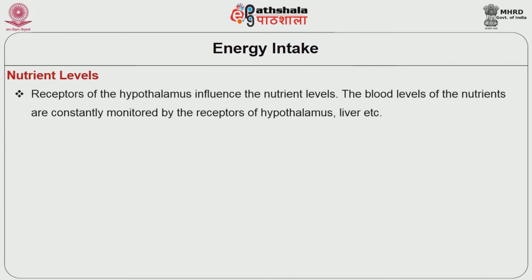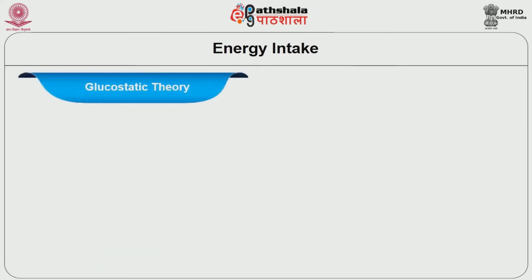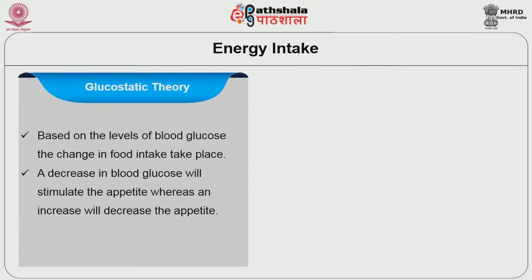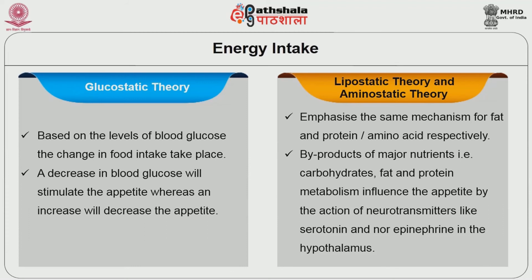Nutrient levels: receptors of the hypothalamus influence the nutrient levels. The blood levels of the nutrients are constantly monitored by the receptors of the hypothalamus, liver etc. Glucostatic theory, lipostatic theory and aminostatic theory well explain the energy nutrients. Glucostatic theory: based on the levels of blood glucose, change in food intake takes place — a decrease in blood glucose stimulates the appetite, whereas an increase decreases the appetite. Lipostatic theory and aminostatic theory emphasize the same mechanism for fat and protein or amino acids respectively. By-products of major nutrients — carbohydrates, fat and protein metabolism — influence the appetite by the action of neurotransmitters like serotonin and norepinephrine in the hypothalamus.